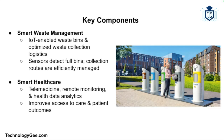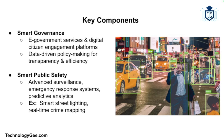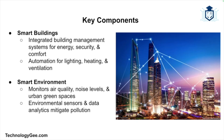Smart healthcare enhances delivery through telemedicine, remote monitoring, and health data analytics, improving access to care and patient outcomes. Smart governance facilitates transparent and efficient governance through e-government services, digital citizen engagement platforms, and data-driven policy making. Smart public safety employs advanced surveillance, emergency response systems, and predictive analytics — examples include smart street lighting and real-time crime mapping. Smart buildings integrate management systems to optimize energy usage, security, and comfort using sensors and automation. The smart environment component monitors air quality, noise levels, and urban green spaces to mitigate pollution and enhance urban resilience.